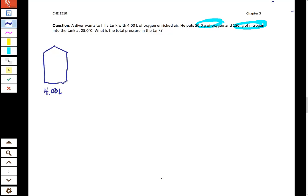We know the temperature is 25 degrees Celsius and we are starting to see that we have the components we need for PV equals NRT. We've got the volume, we've got the temperature, we've got R and we're searching for pressure and the only problem is that we're given our grams of oxygen and nitrogen instead of our moles.